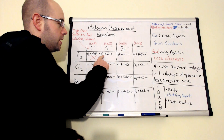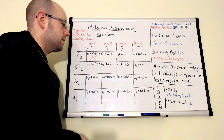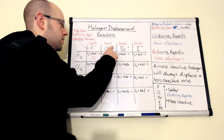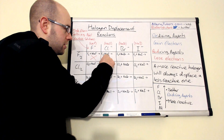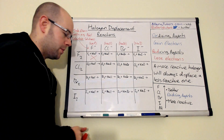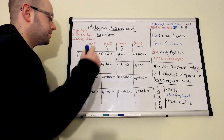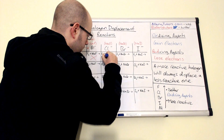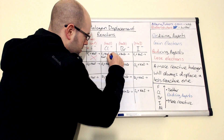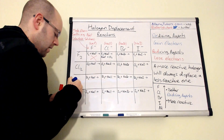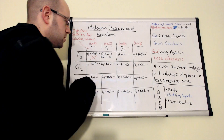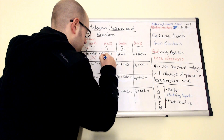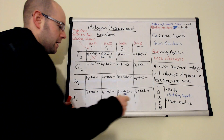If we come to F2 plus NaCl — fluorine is more reactive than chlorine, so it will actually swap. The fluorine and the chlorine swap over, and what you'd make is NaF plus Cl2. This needs to be balanced, so put a two in front of NaCl and a two in front of NaF. Because this is a displacement reaction, fluorine is pale yellow and the sodium chloride solution is colourless.